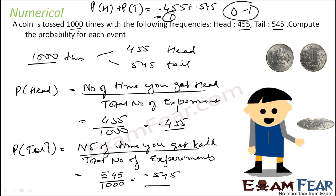If this concept is not clear, just wait for a few more examples. With that the concepts will be clear — why probability of head and probability of tail sum to 1 — because we have covered all the events.